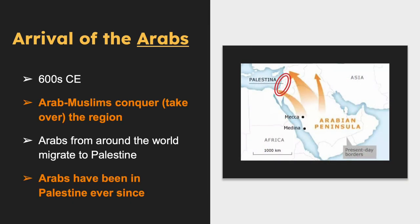The arrival of the Arabs: Arab migration to Palestine can be traced back to the 600s CE, when the Arab-Muslim conquest of the region brought large numbers of Arab people to the area. Over the centuries, Arab people from various parts of the Arab world continued to migrate to Palestine, sometimes as a result of economic or political factors, and sometimes as a result of invasions or military conquests. As a result, the Arab population in Palestine has been continuously present for over a thousand years, having a significant impact on the region's culture, language, and identity.